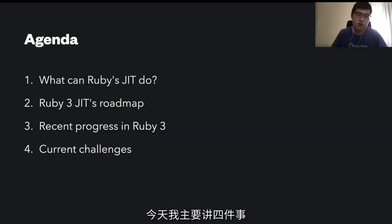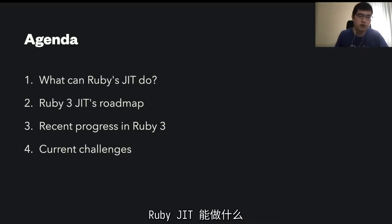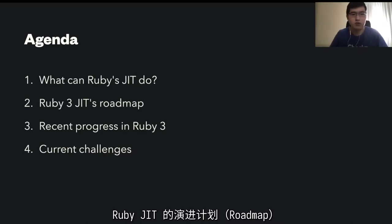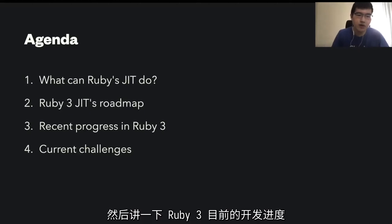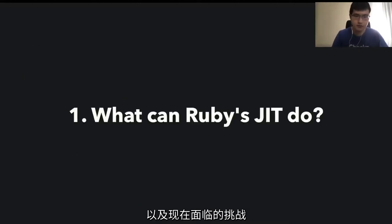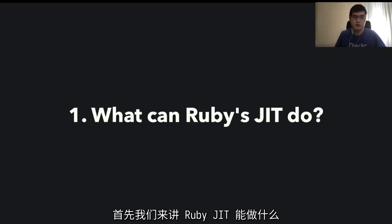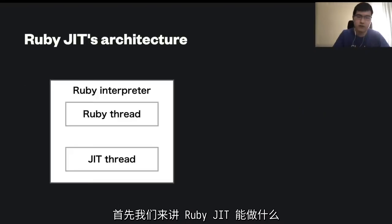So today I'm going to talk about four things. First, what can Ruby's JIT do? Second, Ruby 3.x JIT's roadmap, and then recent progress in Ruby 3 and current challenges. So first, what Ruby JIT can do is the first topic.